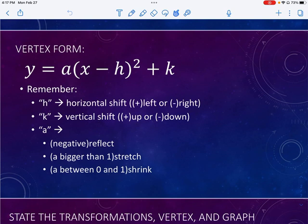Remember our H is a horizontal shift, left or right. We go left if it's positive, we go right if it's negative. K is a vertical shift — if it's a plus K, we go up; if it's a minus K, we go down. A has two different jobs: if it's negative, it's a reflection — it flips it over. If A is bigger than one, it's a stretch. If A is between zero and one, it is a shrink.